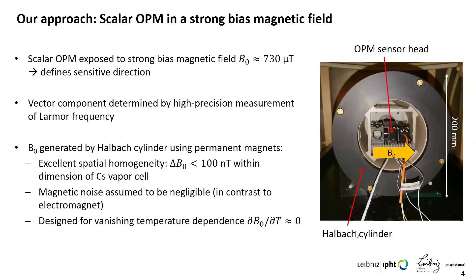This setup provides excellent spatial homogeneity of less than 100 nanoteslas variation within the dimensions of the vapor cell. The magnetic noise generated by the permanent magnets is assumed to be negligible — much less than compared to an electromagnetic solution. The whole setup is designed for vanishing temperature dependence around room temperature.